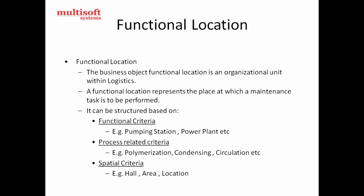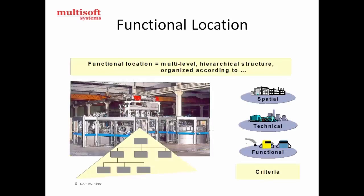Process-related criteria includes processes like polymerization, condensation, circularization, freezing, or any other part of a process. Spatial criteria includes halls, areas, locations, and buildings — essentially any space that is needed.